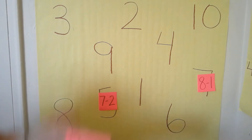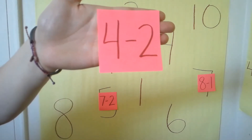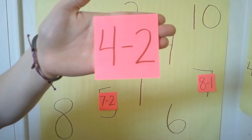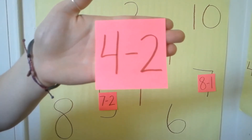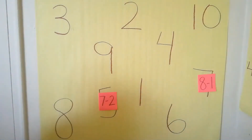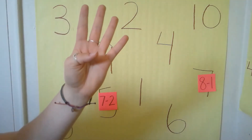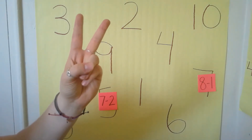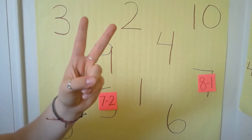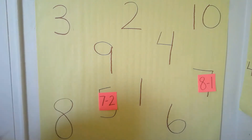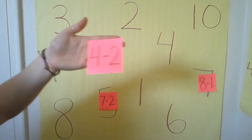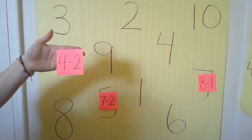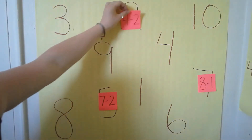What does this number sentence say? Four minus two. What's the answer to four minus two? Let's check using our fingers. We need to put up four fingers, and we're going to take away two. One, two. How many fingers are left? Two. So our answer is two. Four minus two equals two. Can you see the two on our board?